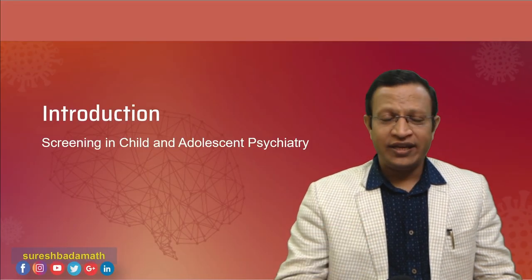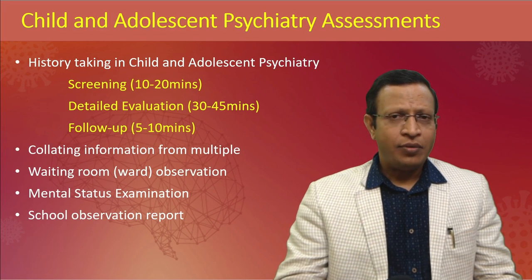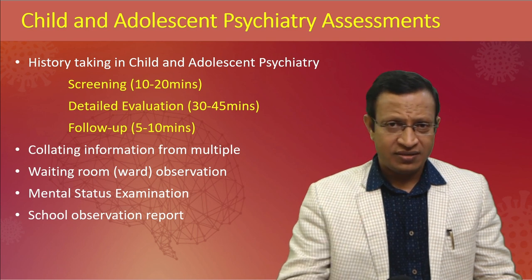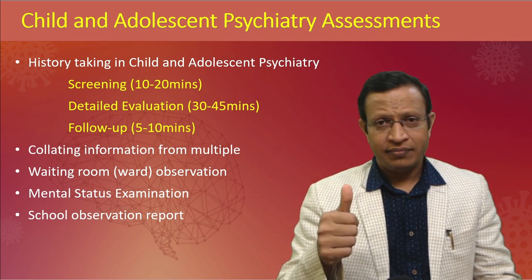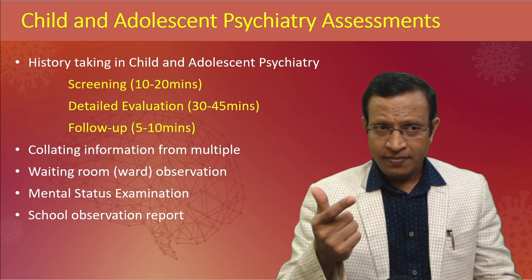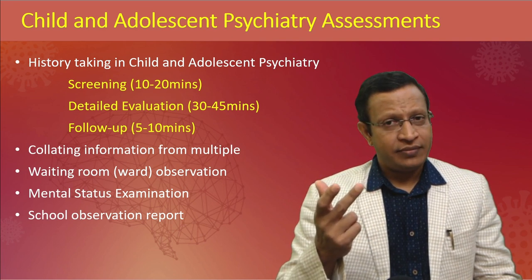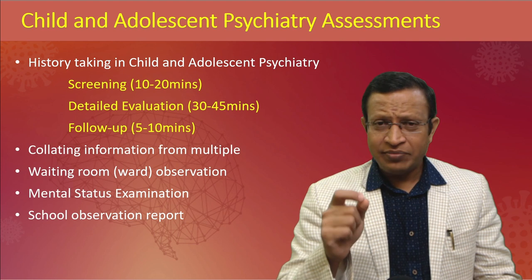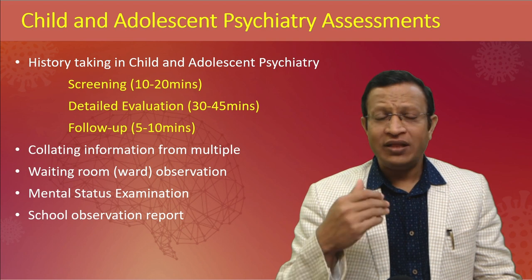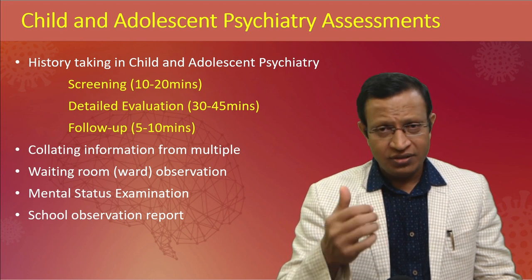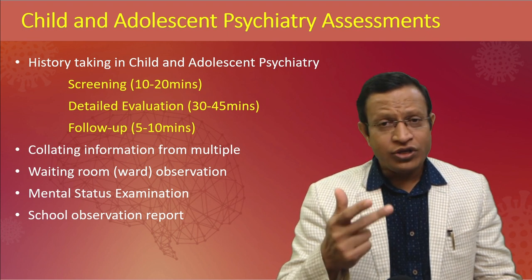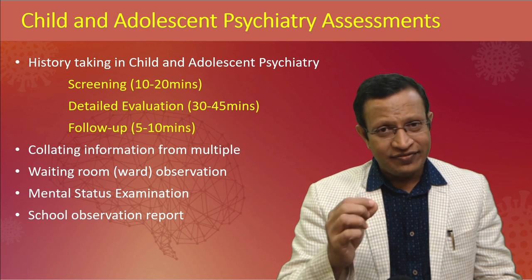Let's discuss how to do screening in child and adolescent psychiatry. Before we start, let's understand there are different types of assessment we do on an outpatient basis. One is screening, which takes 10 to 20 minutes; detailed evaluation, 30 to 45 minutes; and follow-up, 5 to 10 minutes. The time taken depends upon the client and family members — how well they are prepared and cognitively equipped to give information — and also the professional discretion and experience of the psychiatrist.